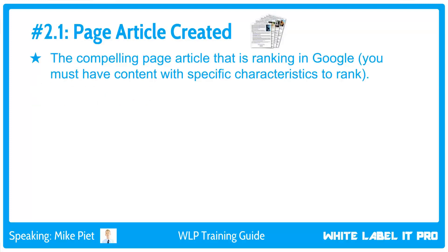The first core step within on-page optimization is page article creation — having the article on the page of the website that will be ranked in the top spots in Google. Sometimes the client's website already has content we can modify; sometimes there's no usable page and you'll need to create one. This is the page on the website that we want to rank in Google. No article means no rankings, and each keyword group needs its own unique site article.